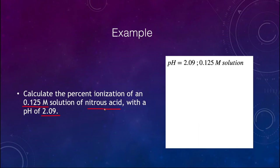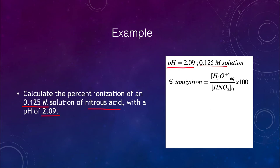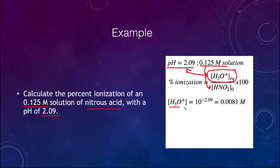We know the pH and we know the molarity of the solution. However, we need to do a little more calculation because we want to calculate the percent ionization. We know the molarity of the solution — that goes in the denominator — but we need to find the concentration of the hydronium ion at equilibrium, and we can do that from the pH. The concentration of H3O+ is 10 to the minus 2.09. That's where the pH comes from — the concentration is 10 to the minus of the pH. Putting that in the calculator gives a molarity of 0.0081.